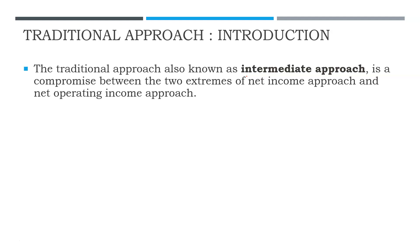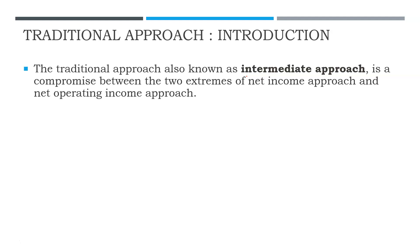This theory is also called the Intermediate Approach. It is called the intermediate approach because it is a compromise between two extreme theories - the Net Income Approach and the Net Operating Income Approach. It is a mixture of both of those, which is why it is also called the intermediate approach.